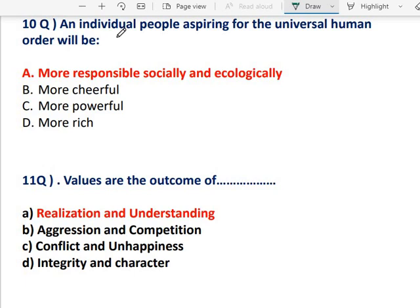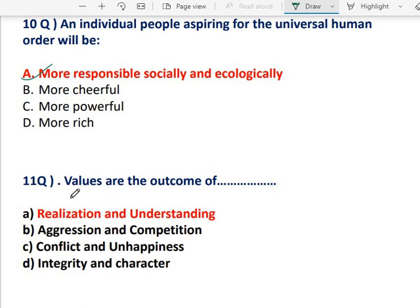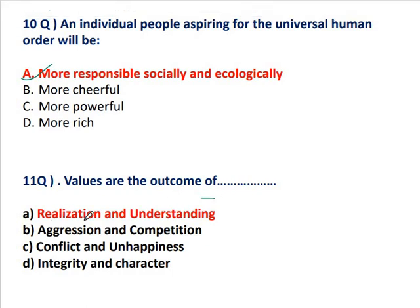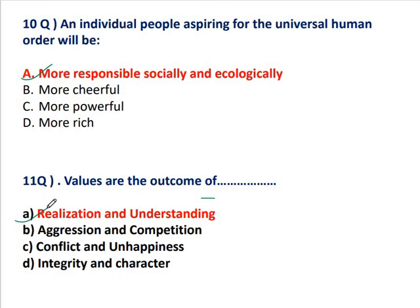Question 10: An individual aspiring for the universal human order will be — the individual has their own aspiration, but when you aspire universally, you understand and value it universally. That order will be more responsible, social and ecological — that is the correct answer. Question 11: The values are the outcome of — what does value give you? Value gives you realization and understanding, power. Because of value education you realize and develop an understanding. So the correct answer is realization and understanding.